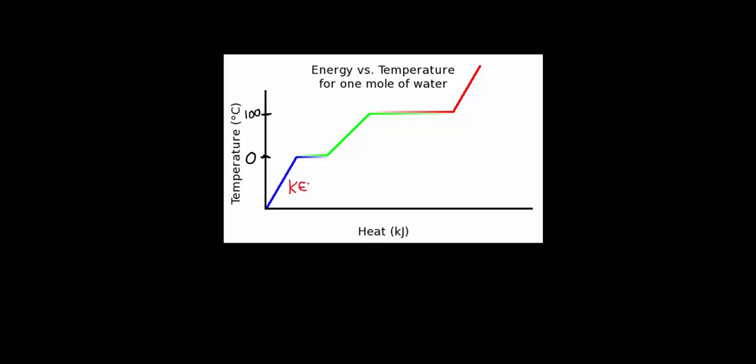When the ice reaches zero degrees the graph flattens because the temperature is no longer rising. Heat is still being added but it is no longer increasing the kinetic energy of the molecules. Instead this energy is being converted into potential energy as the bonds separate.